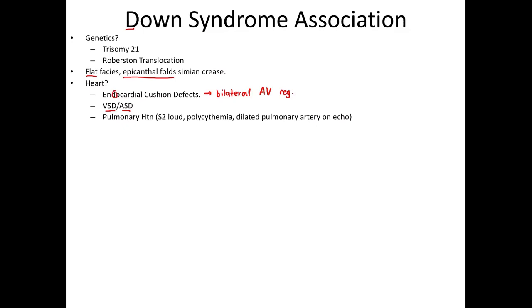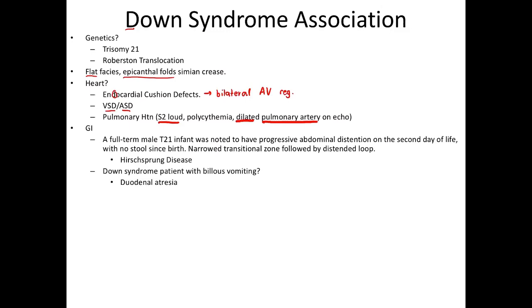Pulmonary hypertension is also going to be seen in Down syndrome patients, which could be due to their obstructive symptoms from their upper airway. Knowing the presentation of pulmonary hypertension and specifically a pulmonary hypertensive crisis is important. These patients are going to have a dilated pulmonary artery on their echo, a loud S2, and could even have signs of right heart failure with the liver edge being down. Remember, in pulmonary hypertension, the lung sounds are usually going to be clear.